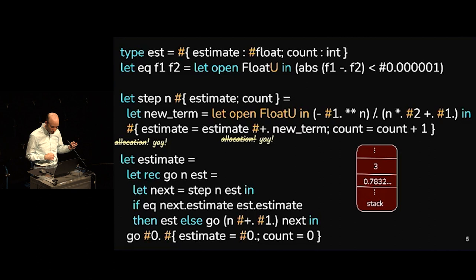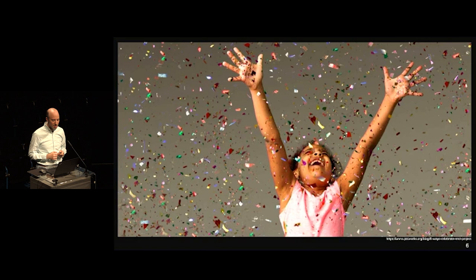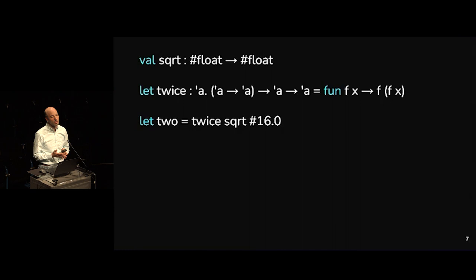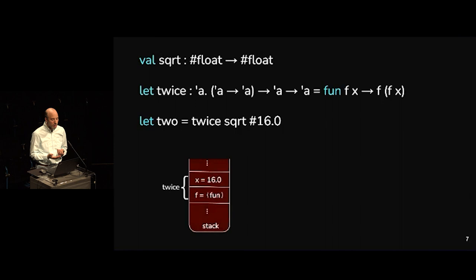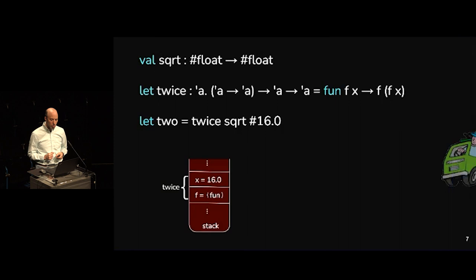But not all is well. Let's look at this example: I have a square root function that works over unboxed floats, and a polymorphic function 'twice' that takes some function f and applies it twice to an argument x. Now I want to compute twice of square root of 16. As this runs, I'll end up with an activation record for twice on my call stack — it has f, a pointer to a function, and x, which is an inline unboxed float right there in the stack.